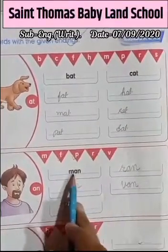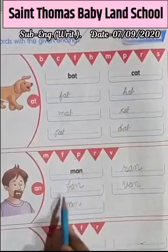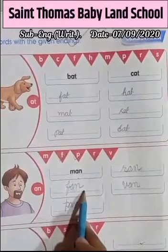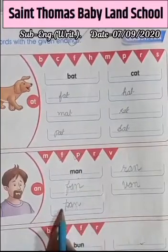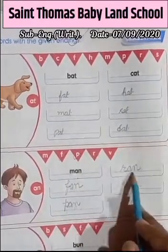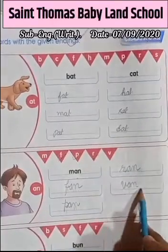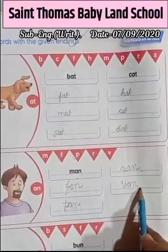Okay, so let's read again. M, A, N — Man. F, A, N — Fan. P, A, N — Pan. R, A, N — Ran. And V, A, N — Van.